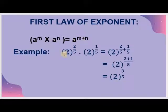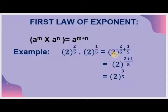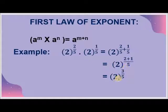For example, if you have 2 raised to the power 2 by 5 multiplied by 2 raised to the power 1 by 5, this becomes 2 raised to the power 2 by 5 plus 1 by 5 — here the powers are added. On simplifying, this becomes 2 raised to the power 2 plus 1 upon 5, which equals 2 raised to the power 3 by 5.